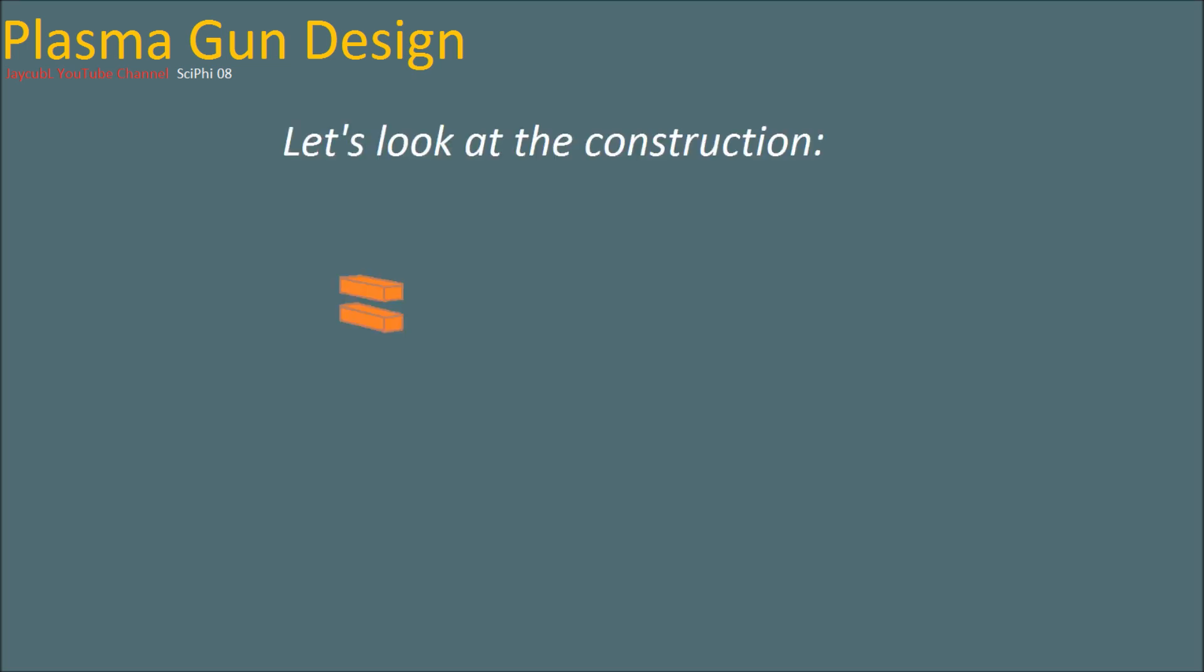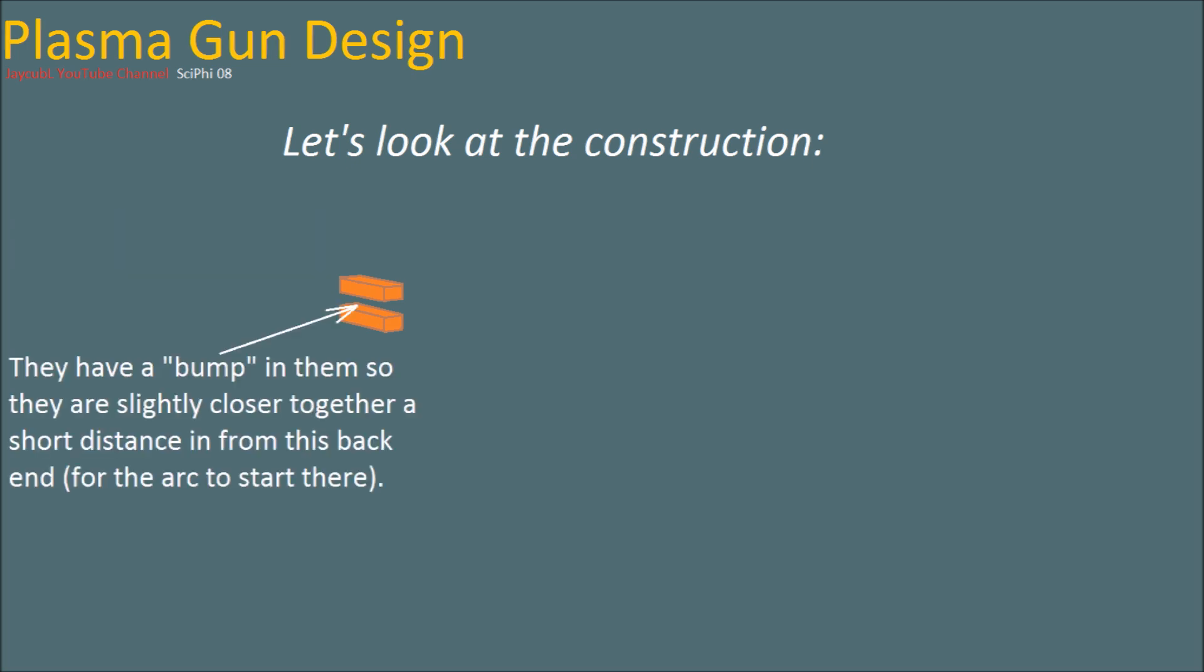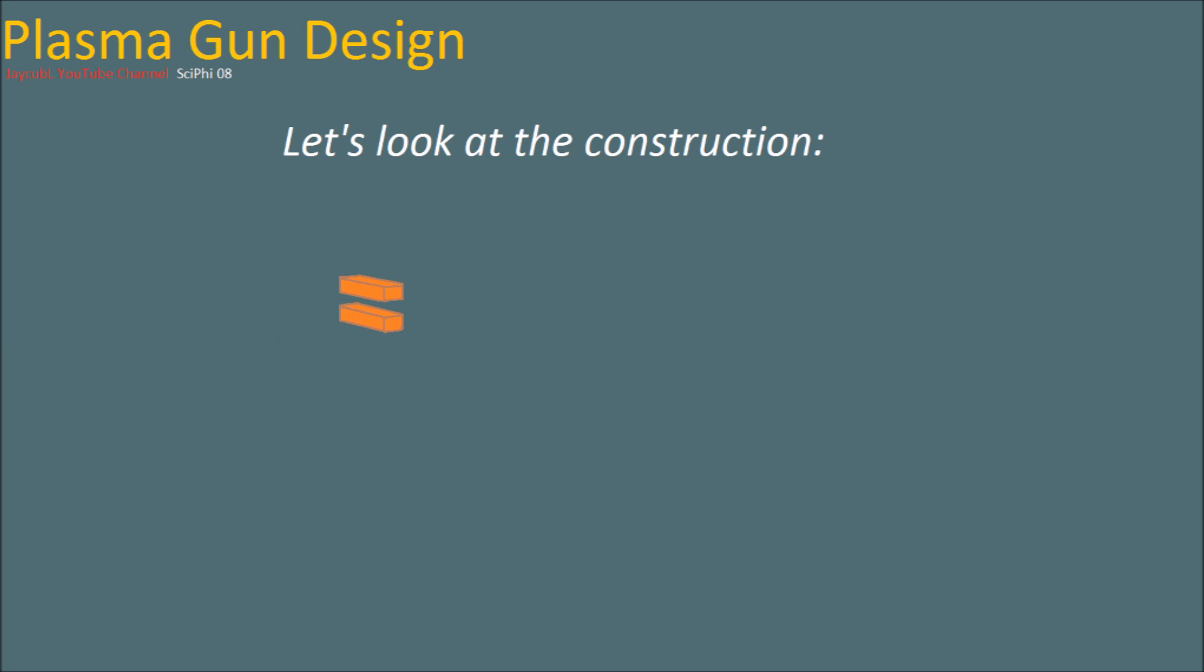The mechanical construction can be very simple and rugged and easily maintainable. At the base end, the rear end of the device has two parallel metal bars. They're pretty close to each other and near one end but not all the way at the end. There's a bump in them so they're slightly closer together to create a starting point for the electric arc so it always starts at the same spot.